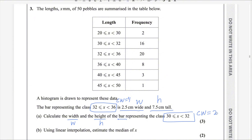For the class 32 to 36, we have frequency 20, and we can find the frequency density for this class. The formula is frequency over class width. Frequency of this class is 20 divided by class width of 4, and we get frequency density as 5.